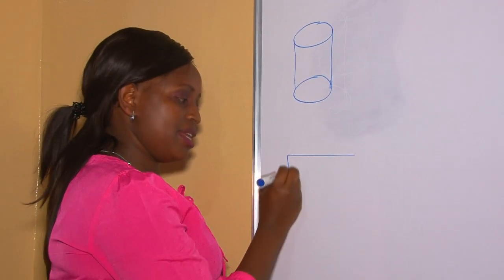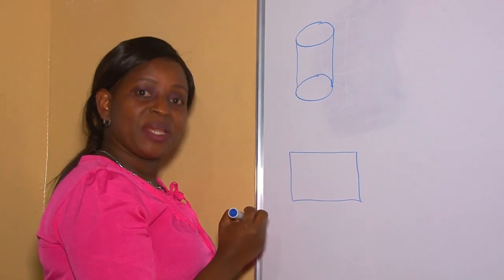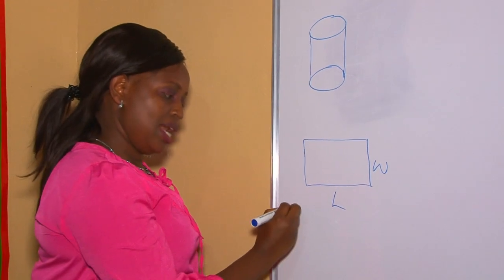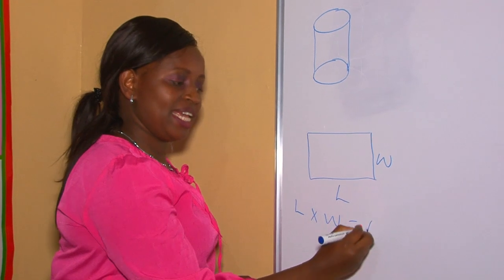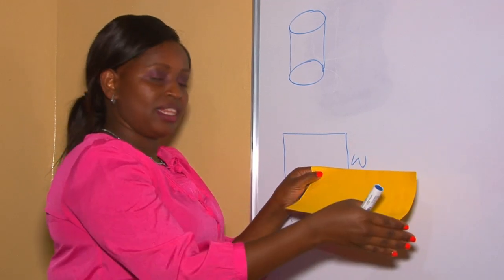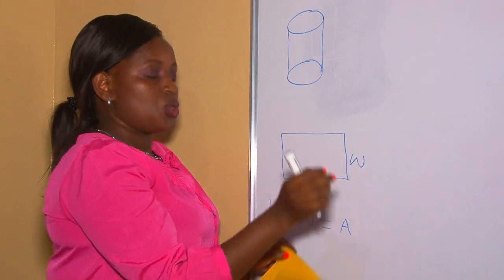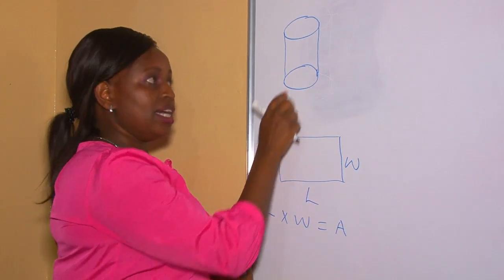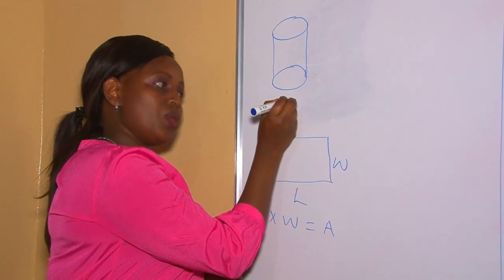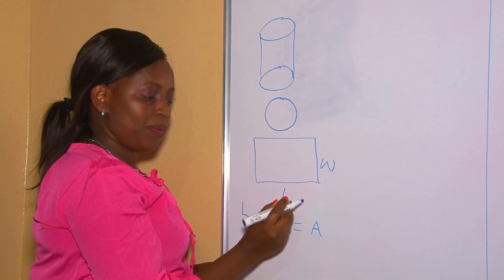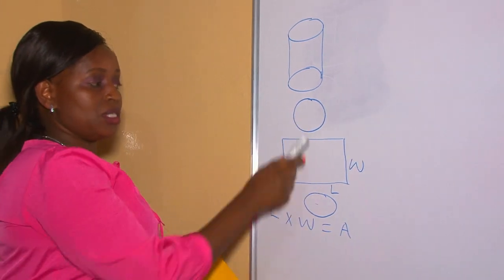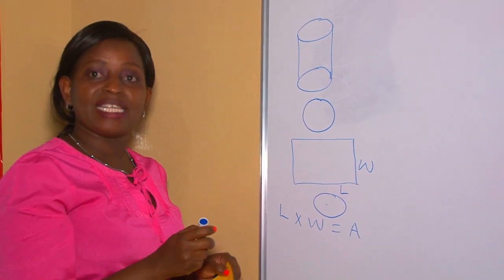It has a rectangle, and how do we get the area of a rectangle? The area of a rectangle is length times width. So length times width gives us the area. A rectangle basically has a length and a width. So this cylinder has a rectangular part and also two circles at the top and at the bottom. The two circles and this rectangle make up a cylinder.